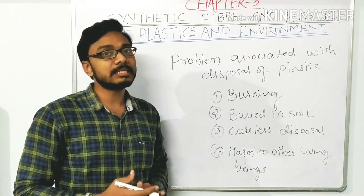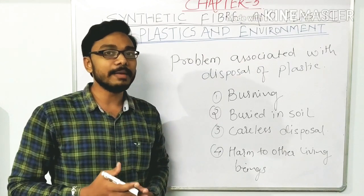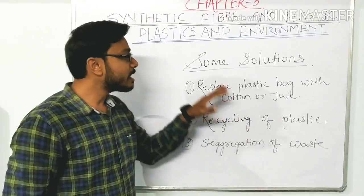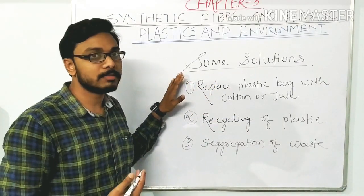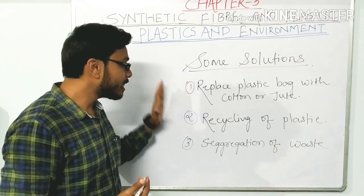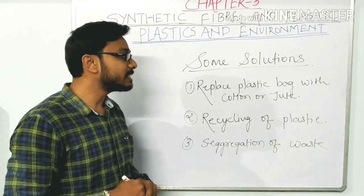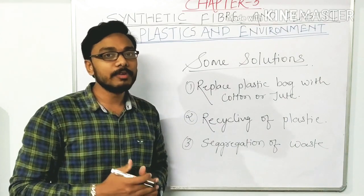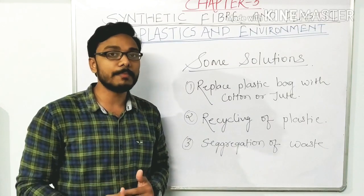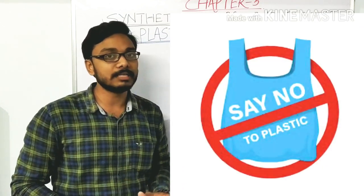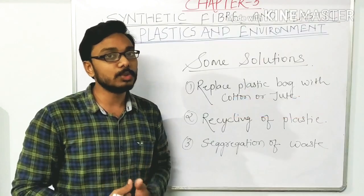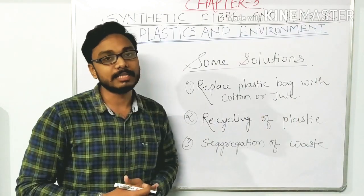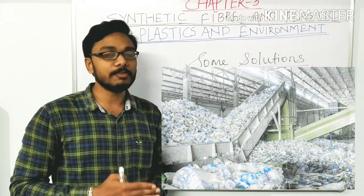To overcome these problems, there are some solutions we can follow for proper management of plastic garbage. The first solution is to replace plastic bags with cotton or jute bags. Whenever we go to the market, we should not use plastic bags. Even if a shopkeeper offers one, we should say no to plastic and carry our own cotton or jute bag.